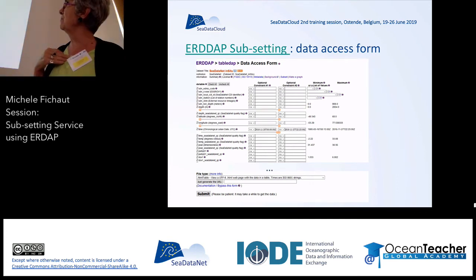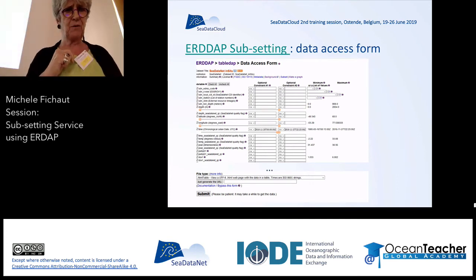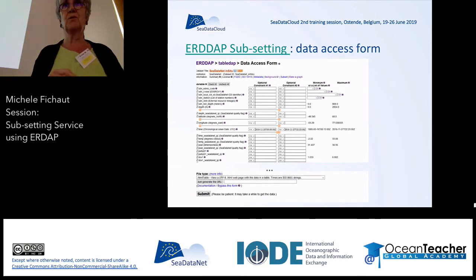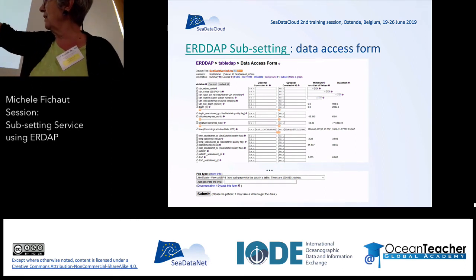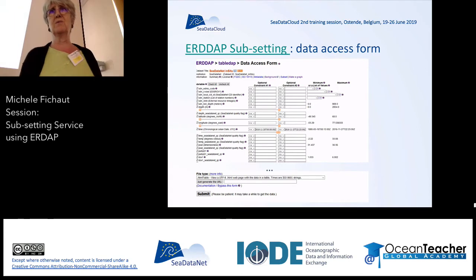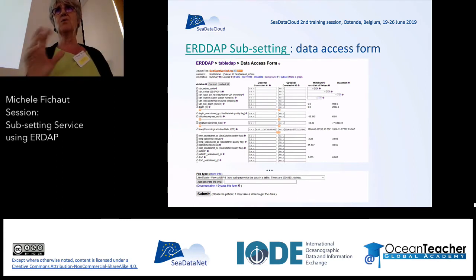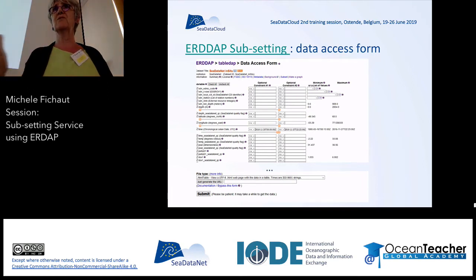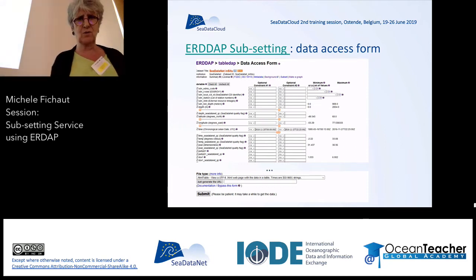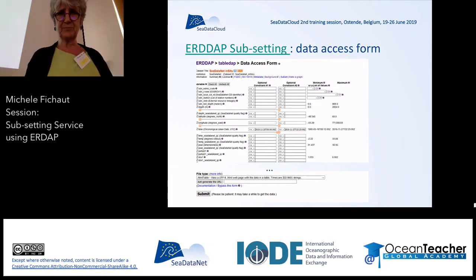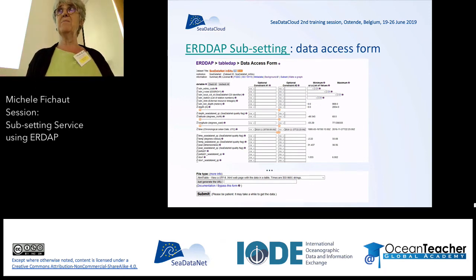Using ERDDAP, you have a subsetting data access form where you can select different criteria for selecting data. For example, if you have a dataset with several parameters but you only want files containing salinity, you are not interested in files which don't contain salinity — you can make this kind of selection using ERDDAP. At the moment, ERDDAP is based on the list of parameters in your NetCDF file, which are the P01 parameters.